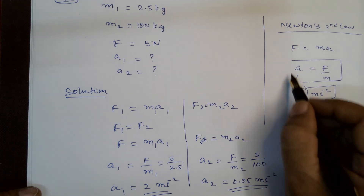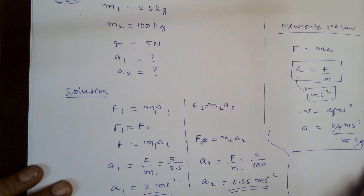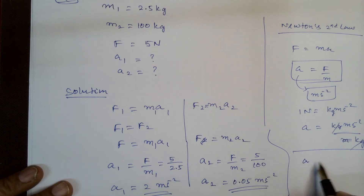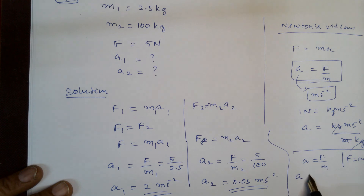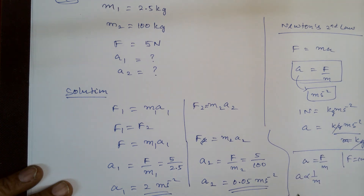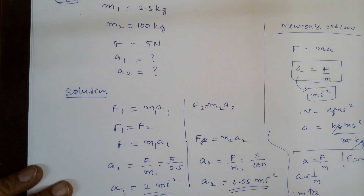Let us work out what we have understood from this. Acceleration is equal to F divided by M. Since F is constant in both cases, when we treat it as a proportionality, A is inversely proportional to M. That is, when M decreases, acceleration increases; when M increases, acceleration decreases. Therefore, A is inversely proportional to M.